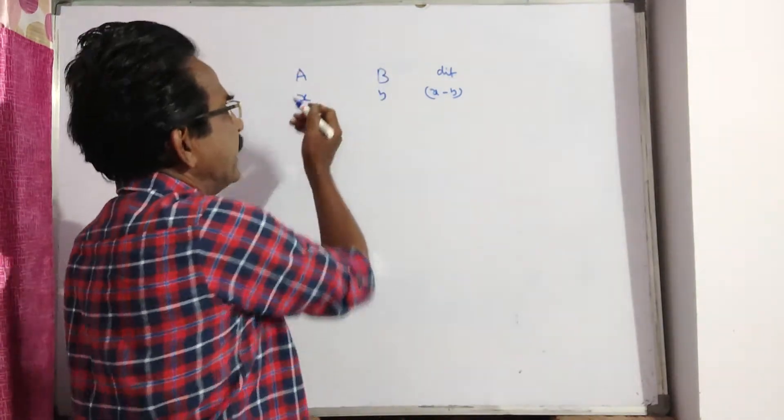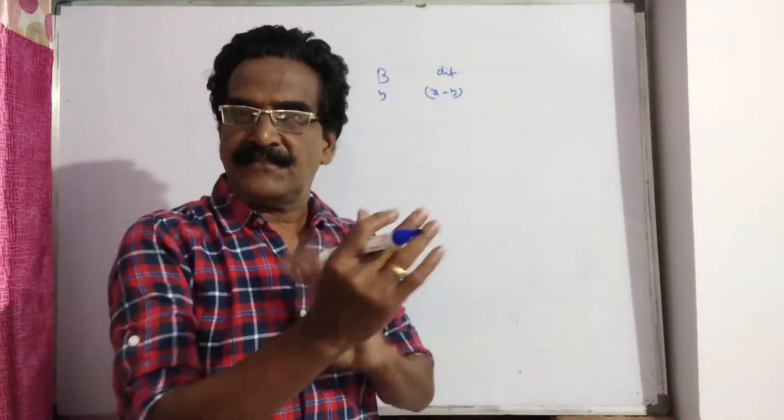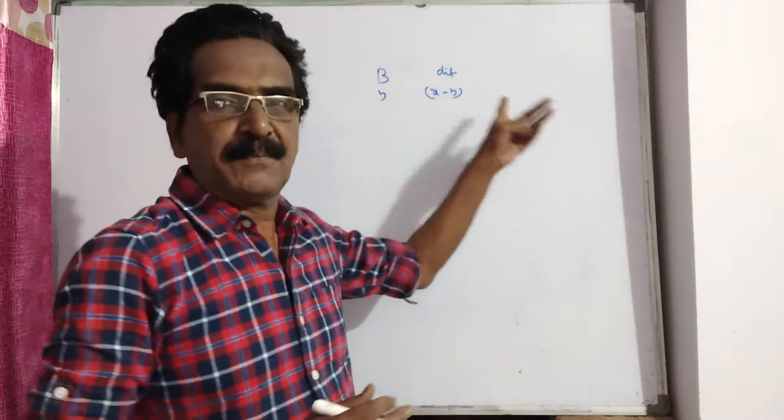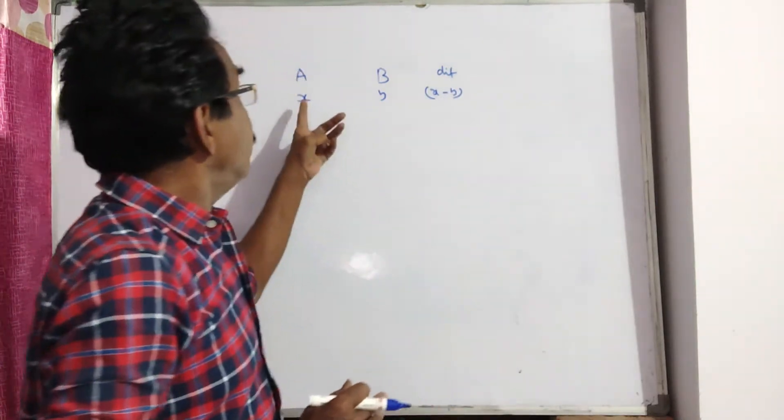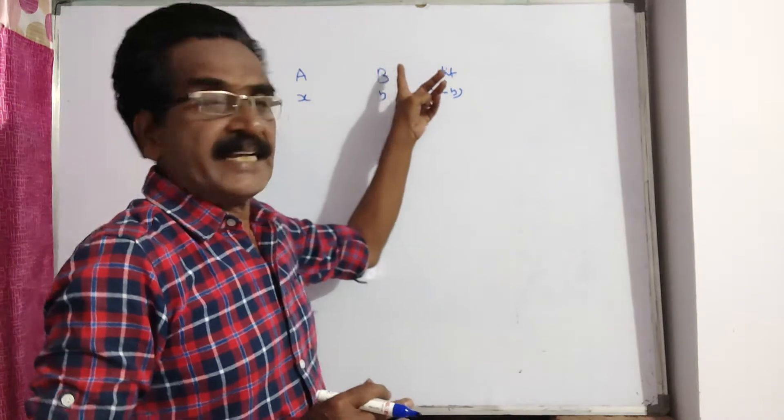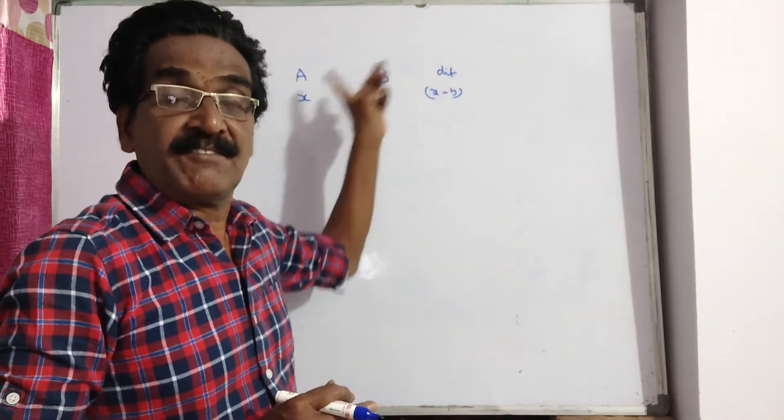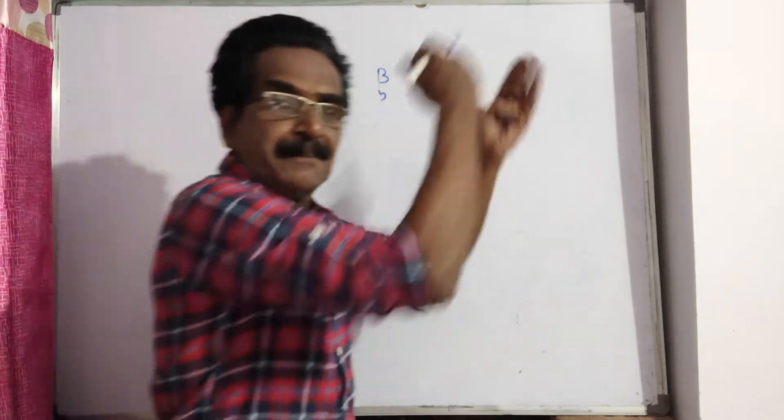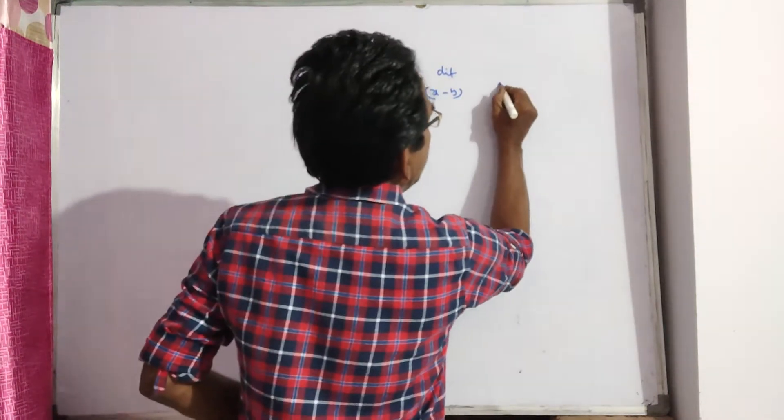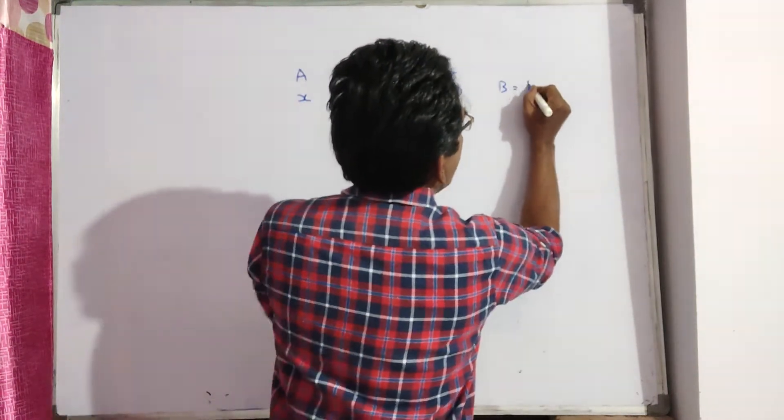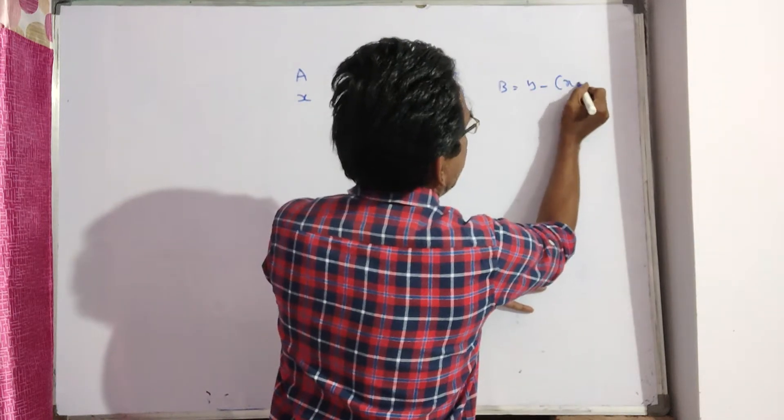See friends, say A is X years and B is Y years, and the difference between the ages is X minus Y. Friends, if A was at the age of B, then B would be Y minus X minus Y.